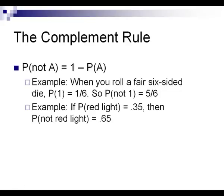The complement rule: the probability of not A occurring is 1 minus the probability of A occurring. For example, if there's a 1 in 6 chance of rolling a 1 on a die, there's a 5 in 6 chance of not rolling a 1. If the probability of being stopped by a red light is 35%, or 0.35, then there's a 65% chance of not being stopped by that red light.